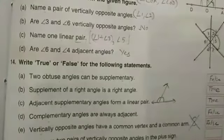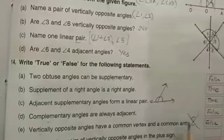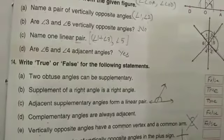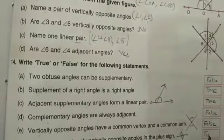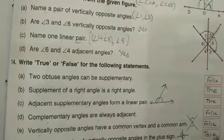There are two pairs of vertically opposite angles in the plus sign. Let us see. One pair and this is another pair. So this is true.